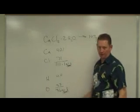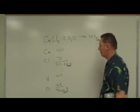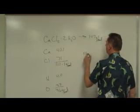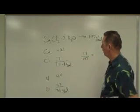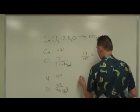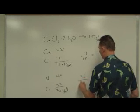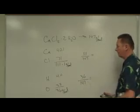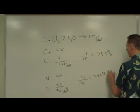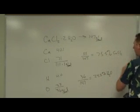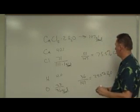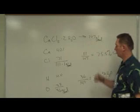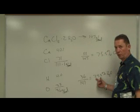As a hydrate, if I sum those together, I get 147 grams per mole as the formula mass. Now to calculate percent composition: 111 divided by 147 gives the percent for calcium chloride, and 36 divided by 147 gives the percent of water in the compound. So that's 75.5 percent calcium chloride and 24.5 percent water — no matter where you find the substance in its hydrated form.